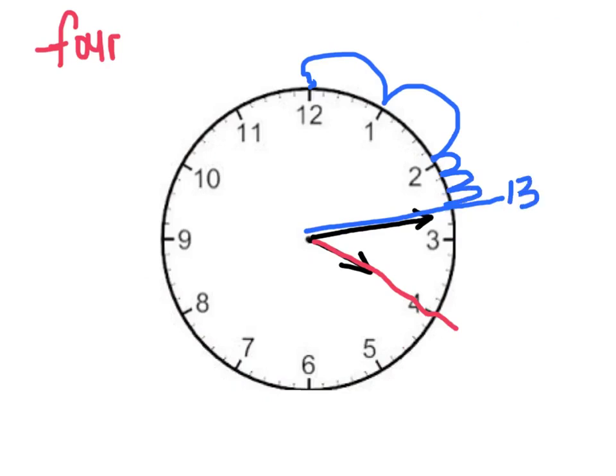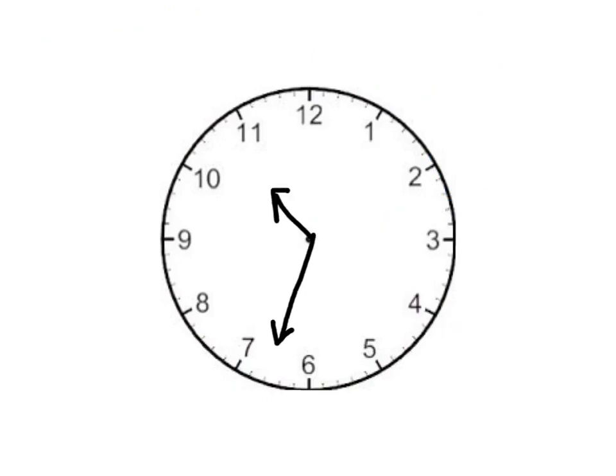So I know the time is four thirteen. And to write that as a digital time, it looks like this. Four thirteen.